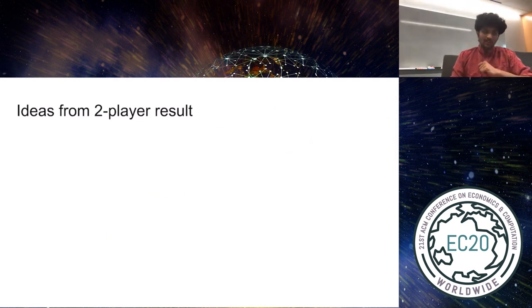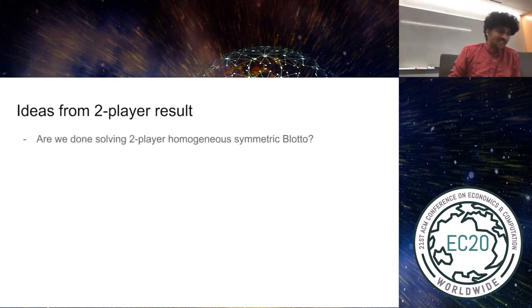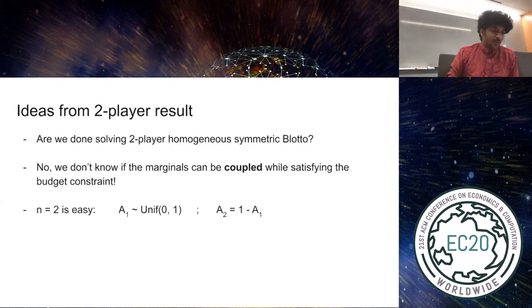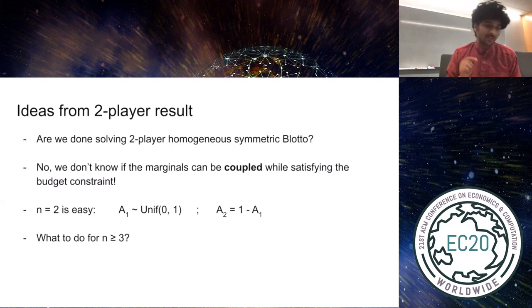So are we done solving the two-player homogeneous symmetric case? Well, not quite. While the utility calculation only depends on the marginal distributions, we still don't know whether there exists a joint distribution that simultaneously satisfies the budget constraint and has the marginals that we calculated. Proving the existence of such a joint distribution is trivial when n equals two, but it's surprisingly complex even when we have n three and greater. So my friend and co-author Ben will now take over to explain these couplings and how we further the insights therein to take on the three-player and k-player of Blotto games.